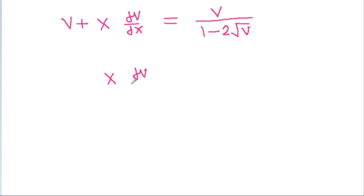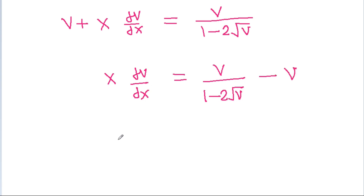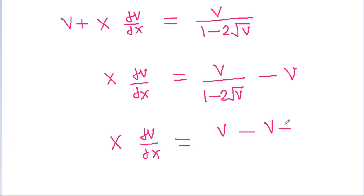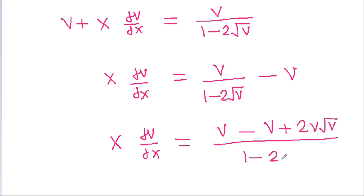So dy/dx is v plus x·dv/dx is equal to v divided by (1 minus 2√v). Therefore x·dv/dx is equal to v/(1 minus 2√v) minus v, which gives v minus v(1 minus 2√v) over (1 minus 2√v), simplifying to 2v√v divided by (1 minus 2√v).